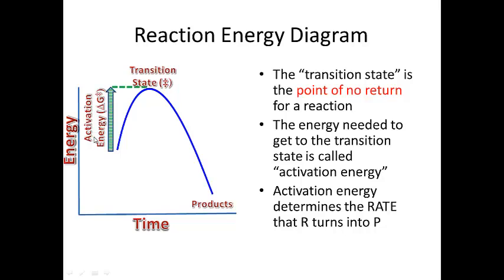If the activation energy is very high, it's going to take a long time to go from reactants through the transition state to products. If the activation energy is low, it doesn't take as long. The technical term for this is activation energy. On the reaction energy diagram, the y-axis is energy and the x-axis is time — sometimes written as the reaction coordinate in textbooks. Over time you go from reactants to products, and the energy required is measured on the y-axis.